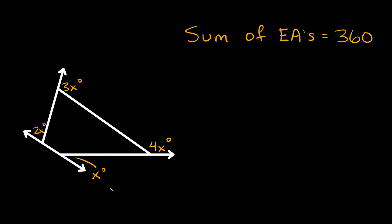Now if we want to solve for x here we can just add all of these exterior angles up and set it equal to 360. So starting with x we can say x plus 2x plus 3x plus 4x is equal to 360.